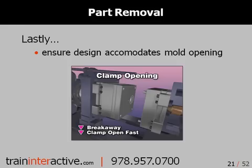Just as draft angles, polishing, radii, fillets, ribs, and gussets will aid in part ejection, all of these factors also assist in separating the part from the mold when the machine opens. Some molds must sit closed for extra seconds to ensure the part does not distort from the core as the mold opens.